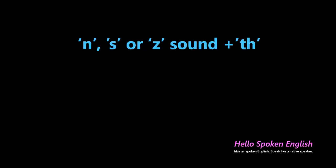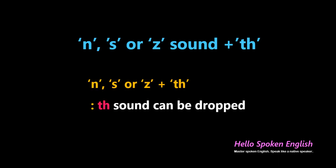Rule number seven is the th sound right after the n, s, or z sounds. When the th sound is right after the n, s, or z sounds, it can be dropped.